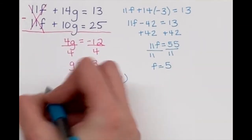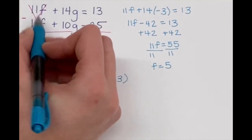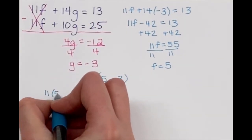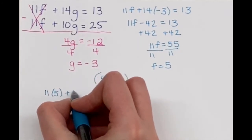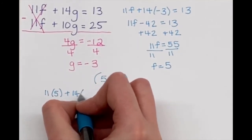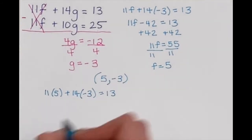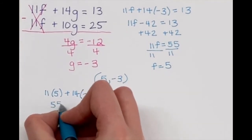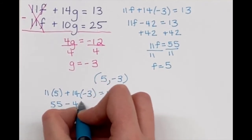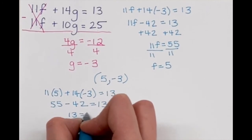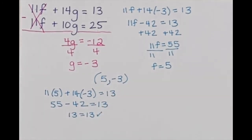So when we check, 11 f, we're going to go back to the top equations here. So 11 times 5 plus 14 times negative 3 should equal 13 if I did this correctly. So 55 minus 42 equals 13. And yes, in fact, it does. So we are good with that check.